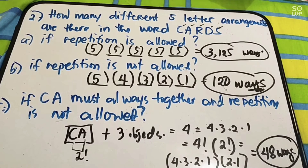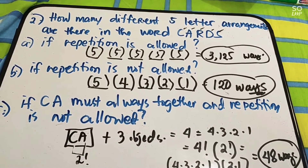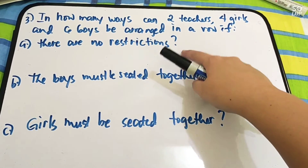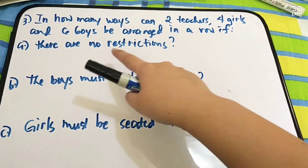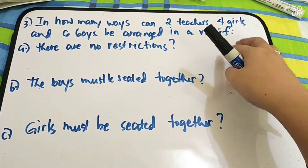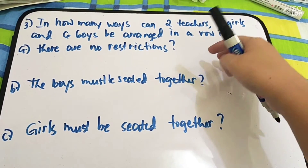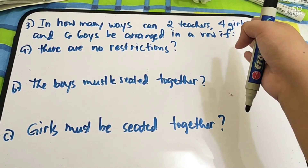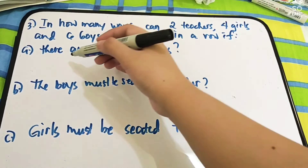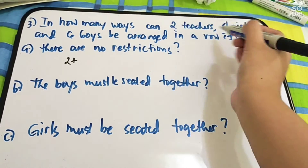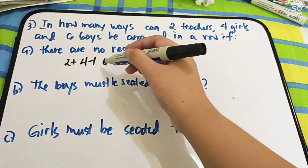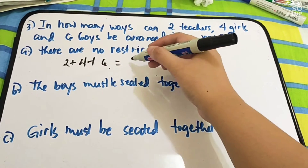Let's have another example pa — last example, number three: in how many ways can two teachers, four girls, and six boys be arranged in a row? Letter A, there are no restrictions. Since there are no restrictions, wala tayong any conditions. So, i-arrange lang natin: two teachers, four girls, and six boys. Two teachers plus four girls plus six boys: six plus four plus two, the answer is twelve.